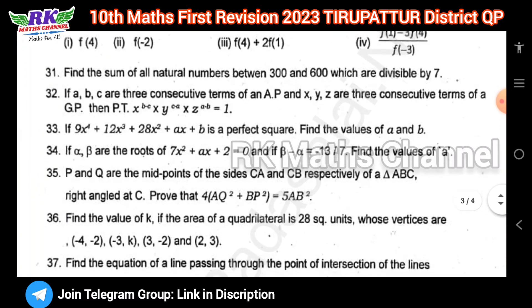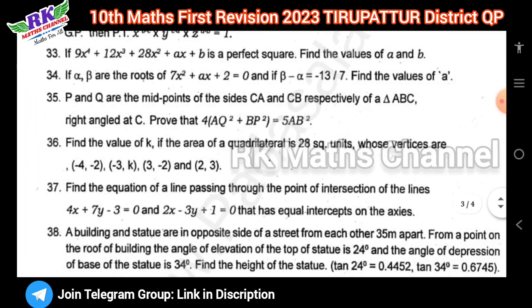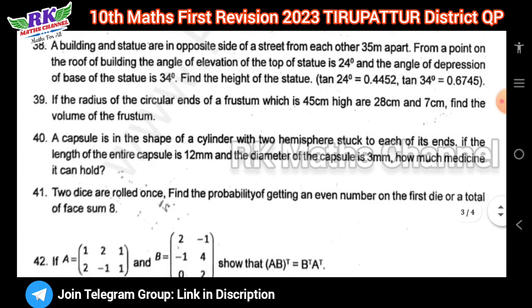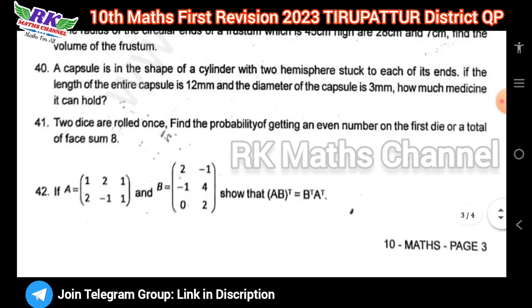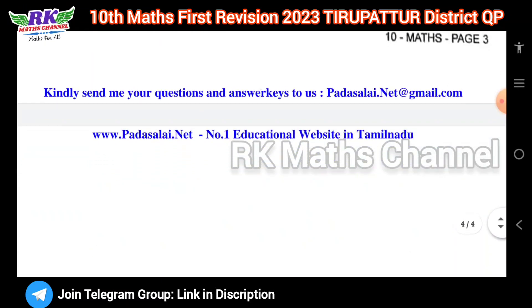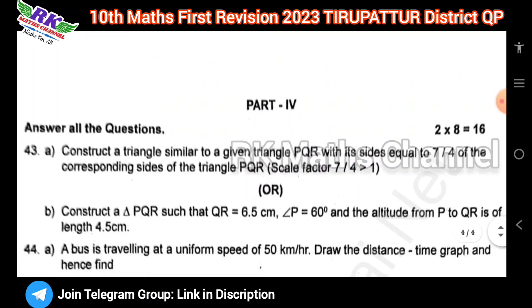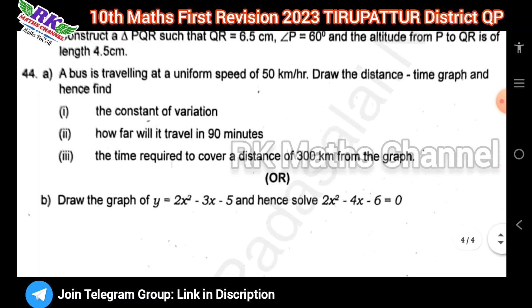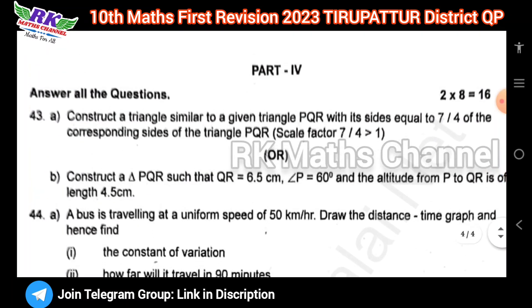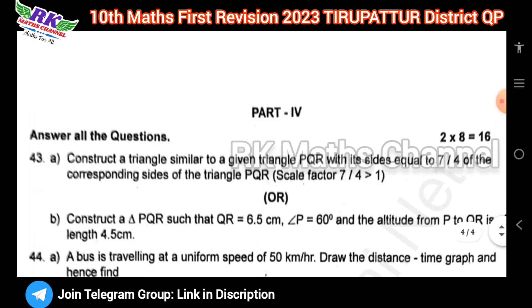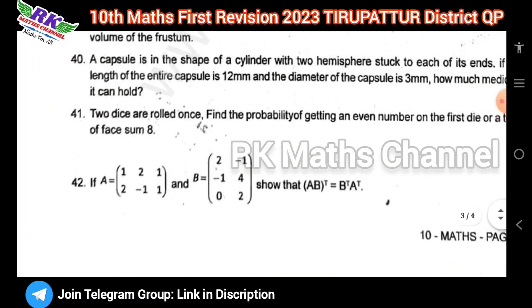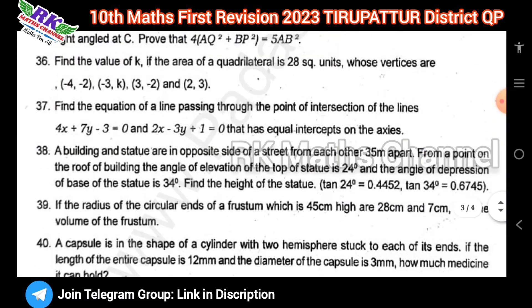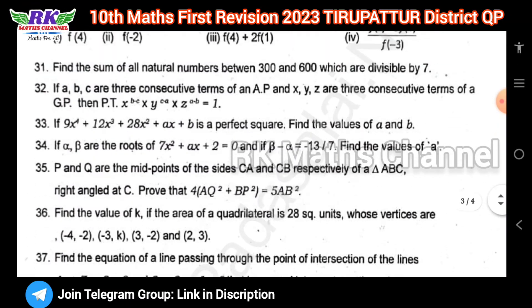Next, Part 3: five more questions from ten questions, and question number 42 is the compulsory question. Next, Part 4: construction, geometry and graph. This is the first revision exam question paper and it will be very useful. If you find the video useful, please like and subscribe to the channel and share with friends. Thank you.